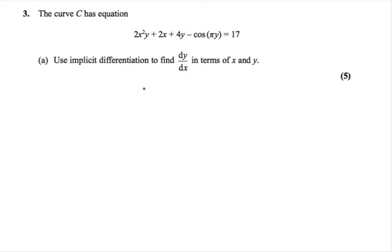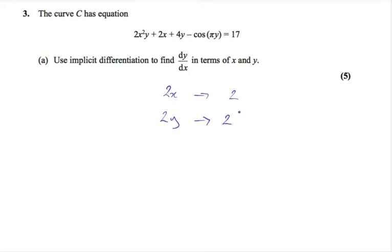Before we start answering the question, I just want to go over something quickly. For example, if we're differentiating 2x, we know that this will differentiate to give 2. If we have 2y, and y is actually a function in terms of x, then to use implicit differentiation, we still differentiate as we did with 2x to get a 2, but we have to add on a dy/dx.